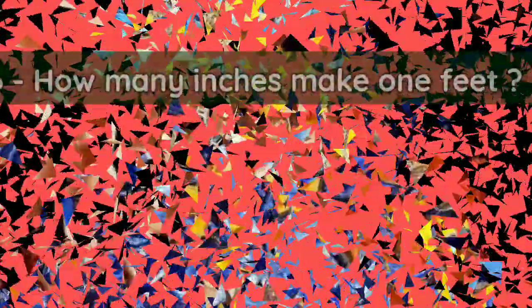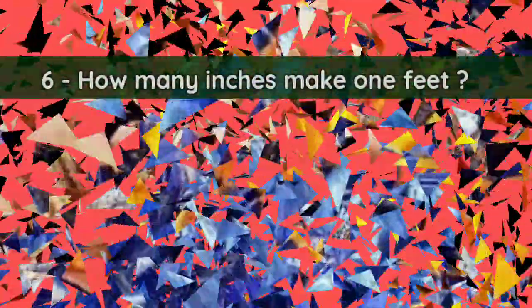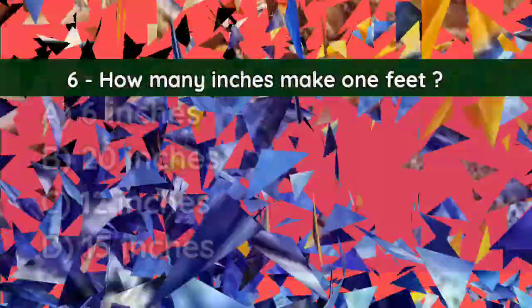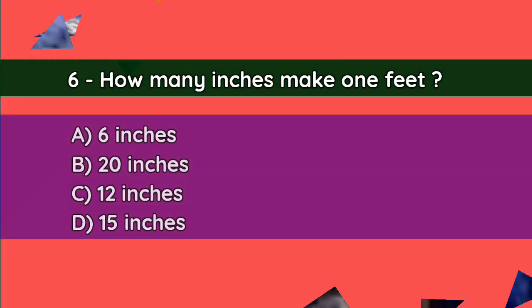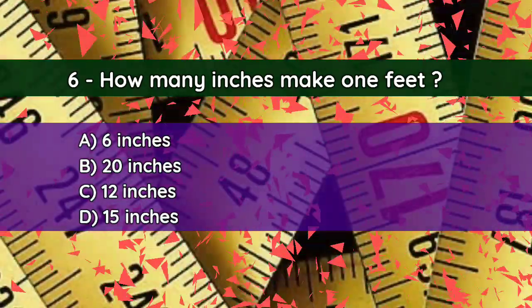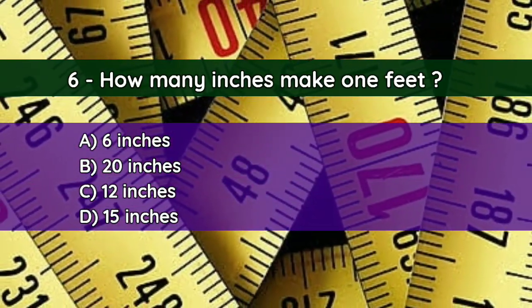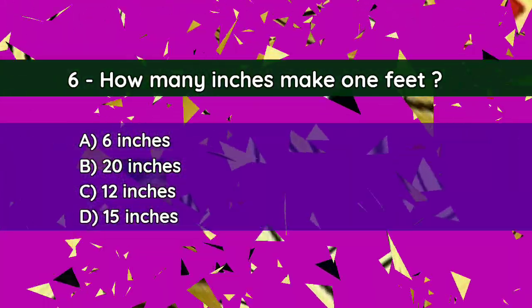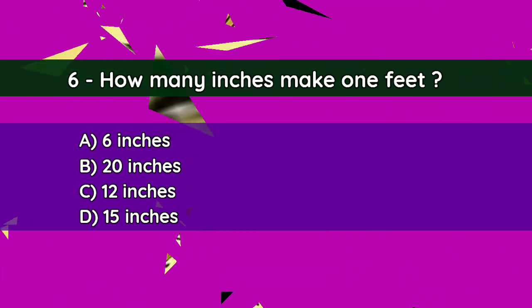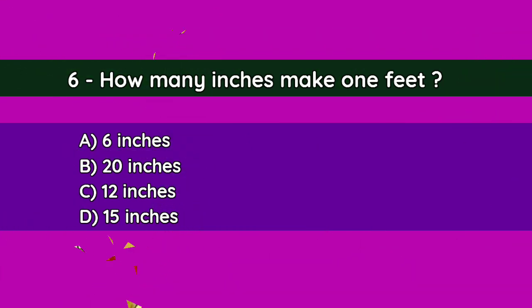Question number six: How many inches make one foot? A. Six inches, B. 20 inches, C. 12 inches, D. 15 inches. And the correct answer is C — 12 inches.